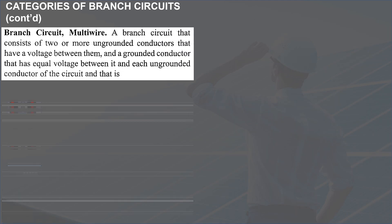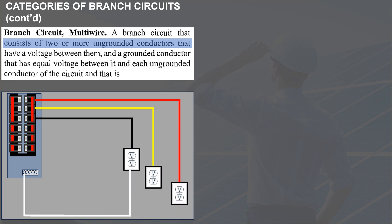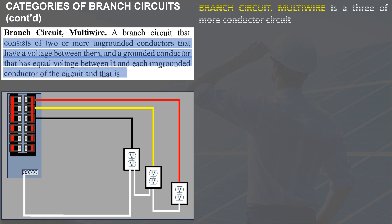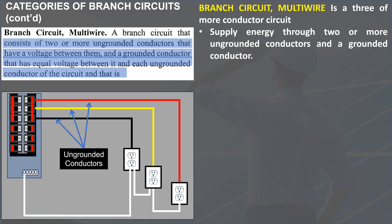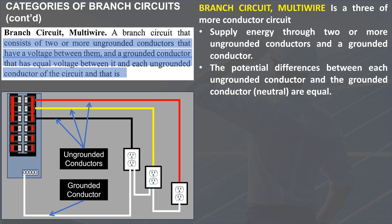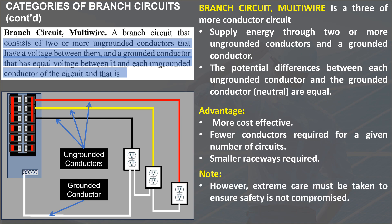Lastly, branch circuit multi-wire: a branch circuit that consists of two or more ungrounded conductors that have a voltage between them, and a grounded conductor that has an equal voltage between it and each ungrounded conductor of the circuit. Therefore, a branch circuit multi-wire is a three or more conductor circuit that supplies energy through two or more ungrounded conductors and a grounded conductor. The potential differences between each ungrounded conductor and the grounded conductor are equal. Multi-wire branch circuit has a big advantage: the cost is more effective because fewer conductors are required and raceways will be smaller. However, extreme care must be taken to ensure safety is not compromised.